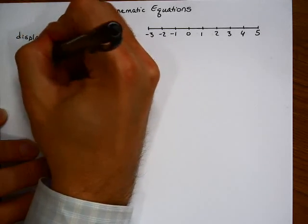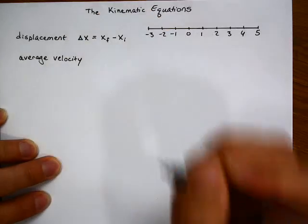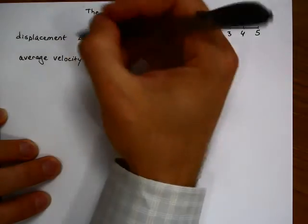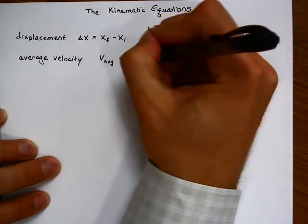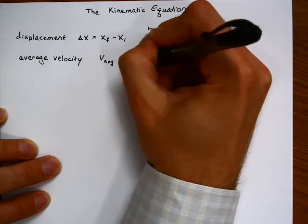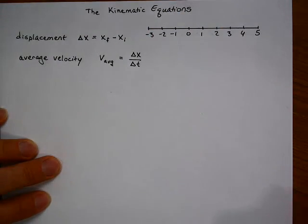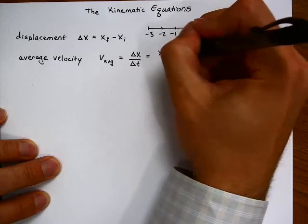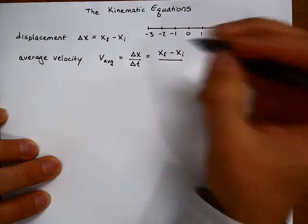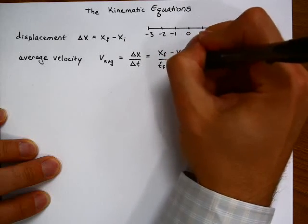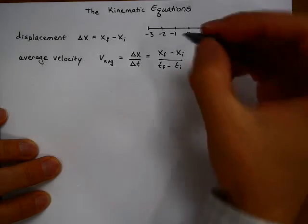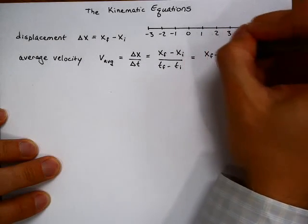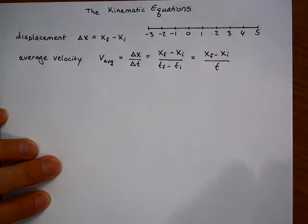Average velocity is the next term. It is abbreviated with a V and a subscript AVG for average. It is equal to displacement divided by a change in time. That is final position minus initial position divided by a change in time.